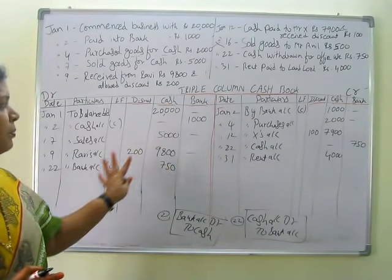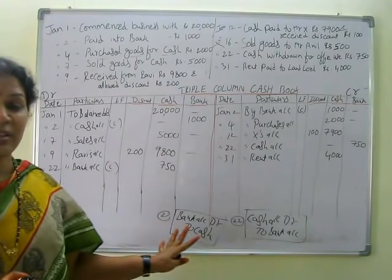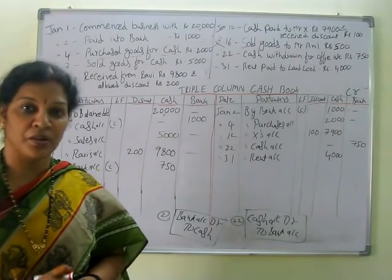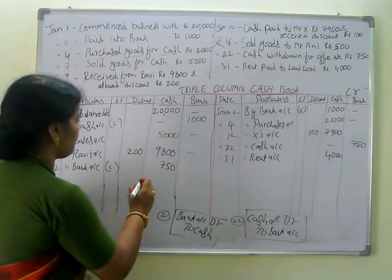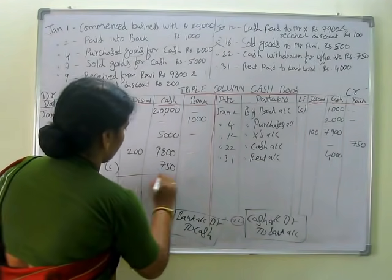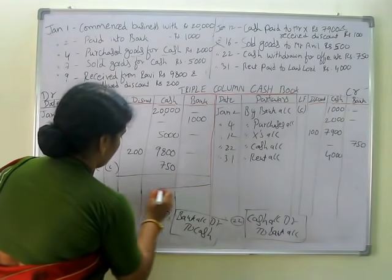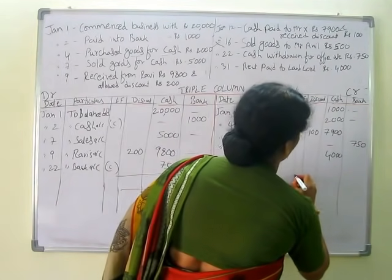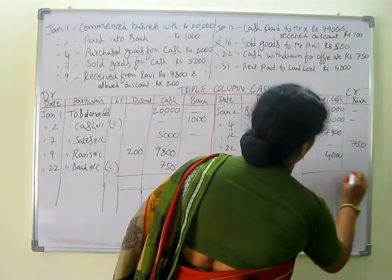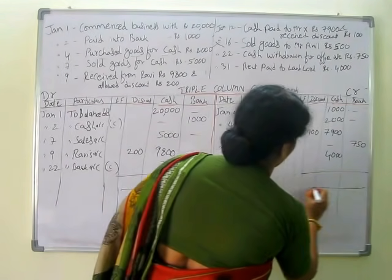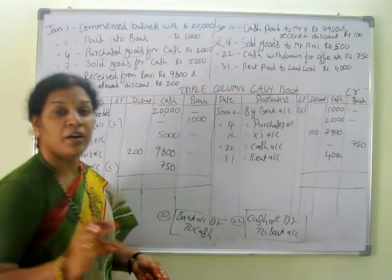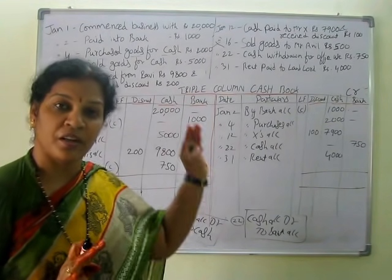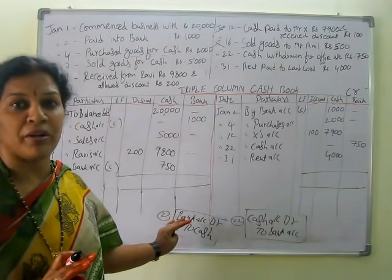We have posted everything, same as single column cash book. We close the accounts. Remember always — discount should not be balanced. Whatever amount is there, simply write it in the outer column. Here we have discount of 200 on the debit side and 100 rupees on the credit side.